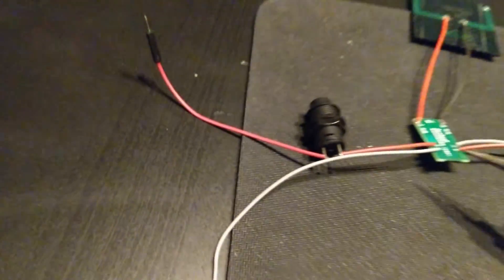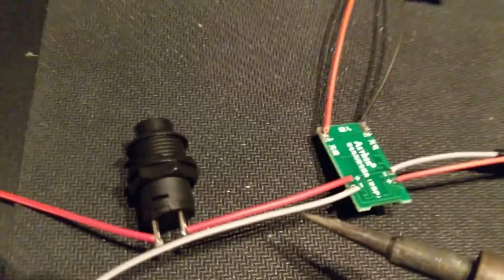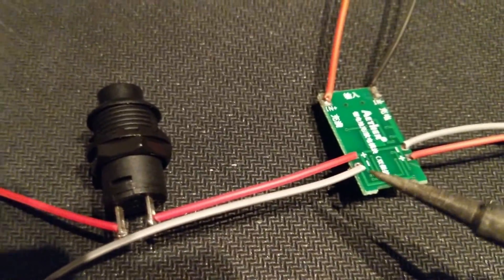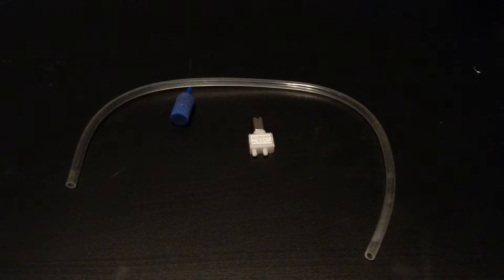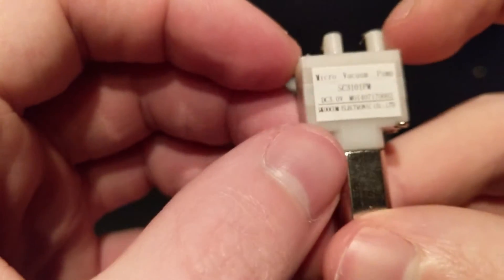I added a switch on one of the output wires so that the pump isn't always on. Here is a close-up of the pump. The middle hole is the output, so I am going to connect the airline tubing there.